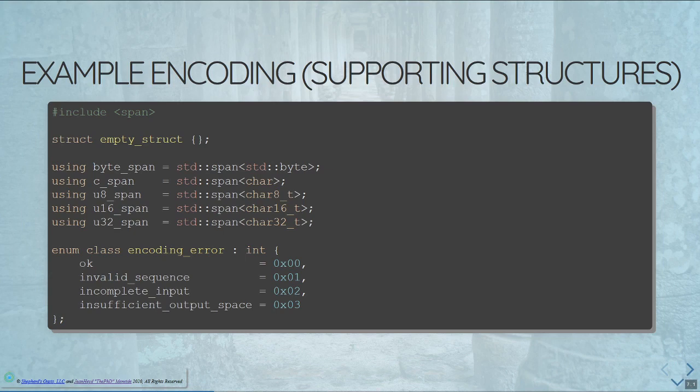We have an encoding error type which can be `encoding_error::okay` — which is zero because that's what the APIs do — `invalid_sequence`, meaning the bytes were wrong, `incomplete_input`, meaning we read everything you gave us and it was all correct but you didn't finish giving us what we needed (for example, if you gave me two UTF-8 code units and I needed three to complete the emoji), and `insufficient_output_space`, meaning there isn't enough space in the buffer you handed me. By default we don't overflow your buffers — we tell you there's not enough space. And if any of these trigger, we don't output any information at all into the final output buffer.